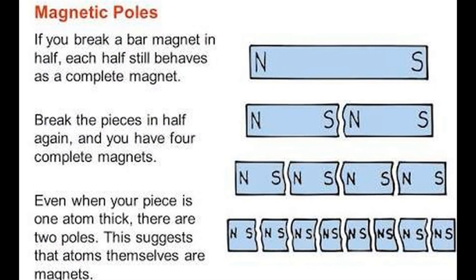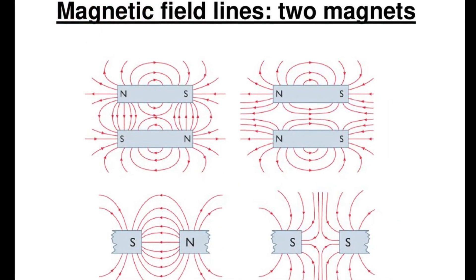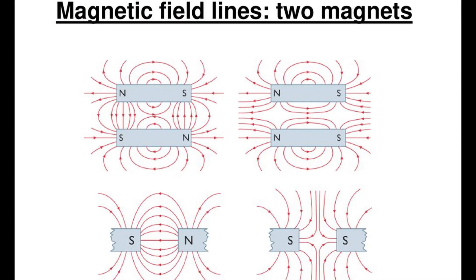The new ends formed at the place where the magnet is cut acquire polarities opposite to what the ends of the pieces possess. The component possessing the original north pole at one end acquires a south pole at the new end created by breaking the magnet into two parts.